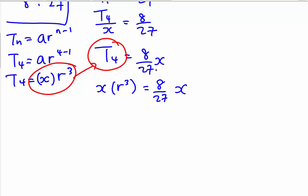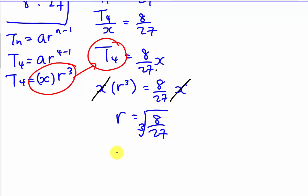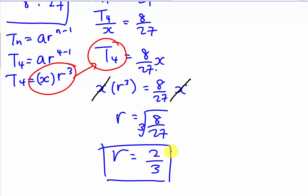When both sides also have x, I can simplify and cancel x. So r^3 equals 8 over 27. I can move the power of 3 to the other side — it becomes the cube root of 8 over 27. So r is the cube root of 8, which gives 2, over the cube root of 27, which gives 3. Now I have found my ratio r = 2/3.